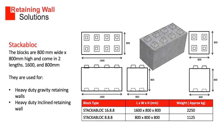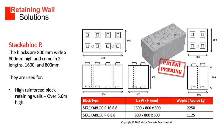Stacker Block is a heavy duty block. The blocks are 800mm wide by 800mm high and come in two lengths: 1600 and 800mm. They are used for heavy duty gravity retaining walls and heavy duty inclined retaining walls. Stacker Block R is the reinforced block option, the same size as Stacker Block but with holes for rebar. They are used for high reinforced block retaining walls.